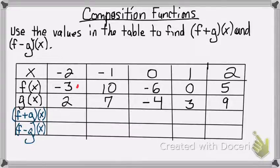all I'm doing is adding these two numbers. So negative 3 plus 2 gives me negative 1. And then I do the same thing in the second column. 10 plus 7 gives me 17.